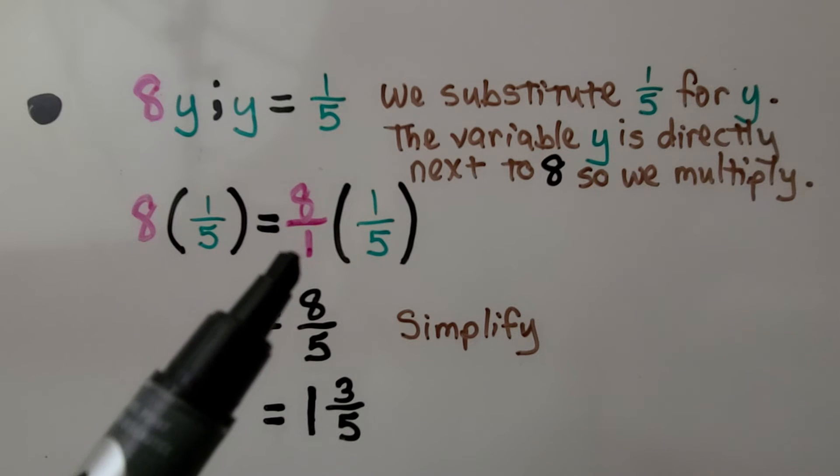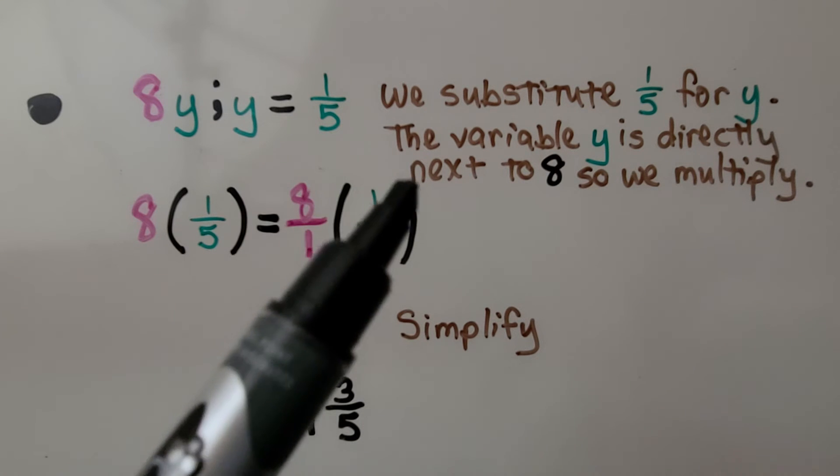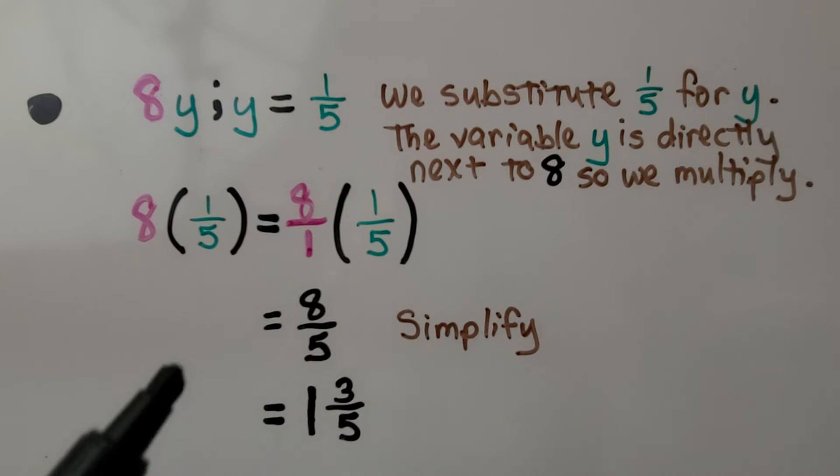We can write the 8 over a 1 and multiply straight across. We have 8 fifths. We can simplify that to 1 and 3 fifths.